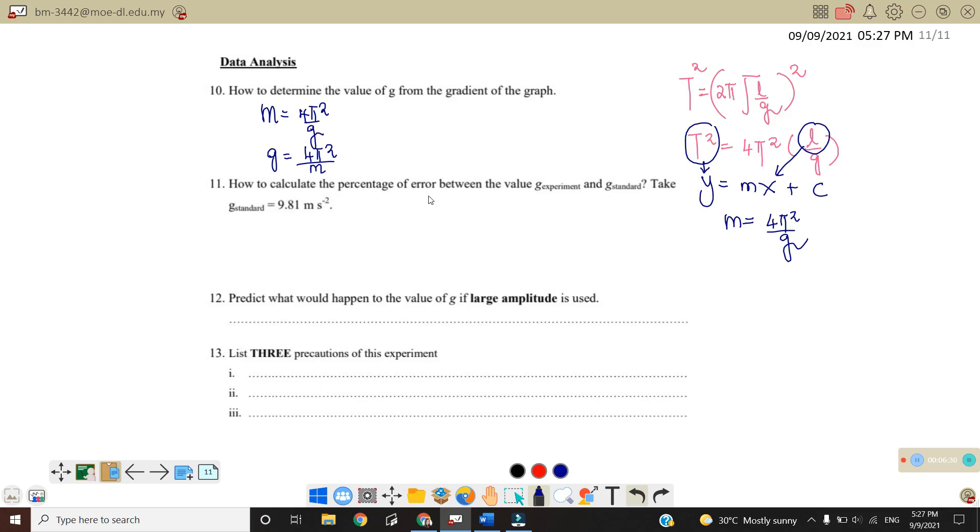Number 11, how to calculate the percentage of error between the experimental value and also theoretical value. So the theoretical value as we know is equal to 9.81. So in order to find the percentage of error, we can use G experiment minus G theory. We use modulus because we only want the difference between them over G theory. So G theory is actually G standard times 100%. So remember to write the percent symbol. And usually the percentage, if smaller than 10%, we consider is more accurate.